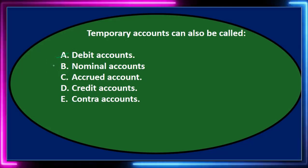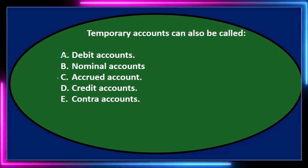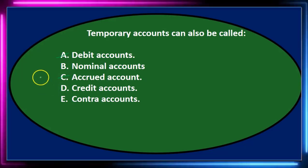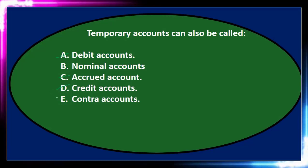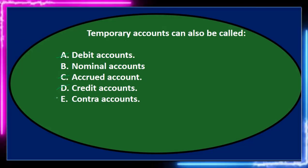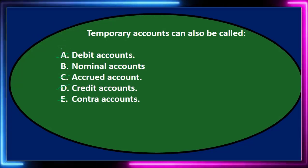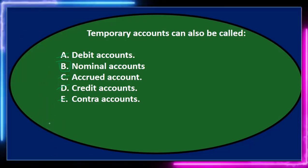Nominal accounts — I'm going to leave that one for now. Accrued accounts — accrued is a term used as a basis for accrual accounting in accordance with the revenue recognition and matching principle, but it's not really applicable to a temporary account, so I'll cross that out. Credit accounts — similar reasoning to debit accounts; credits and debits don't apply to temporary versus permanent. Contra accounts have to do with accounts contra to their normal balances — the most common example is accumulated depreciation having a credit balance even though it's an asset. So it's not a contra account. It has to be nominal accounts. A temporary account can also be called B, nominal accounts — they are synonymous terms.